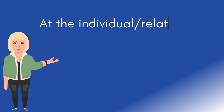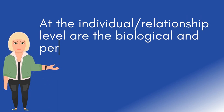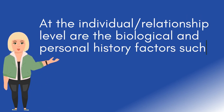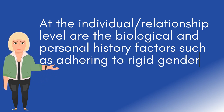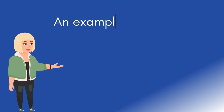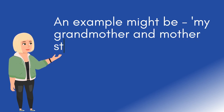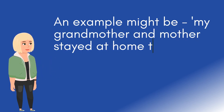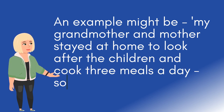At the individual relationship level are the biological and personal history factors, such as adhering to rigid gender roles and identities. An example might be: my grandmother and mother stayed at home to look after the children and cook three meals a day, so I must do the same.